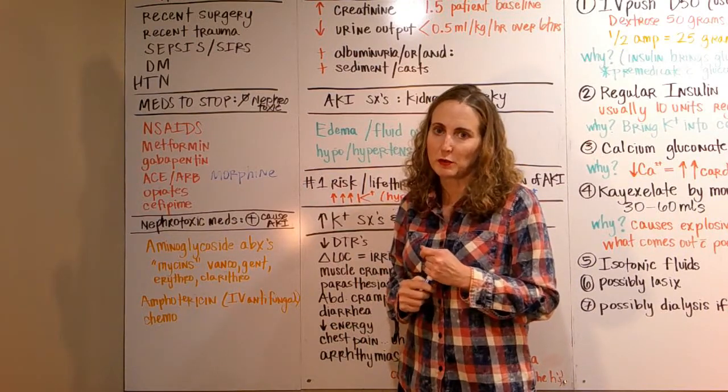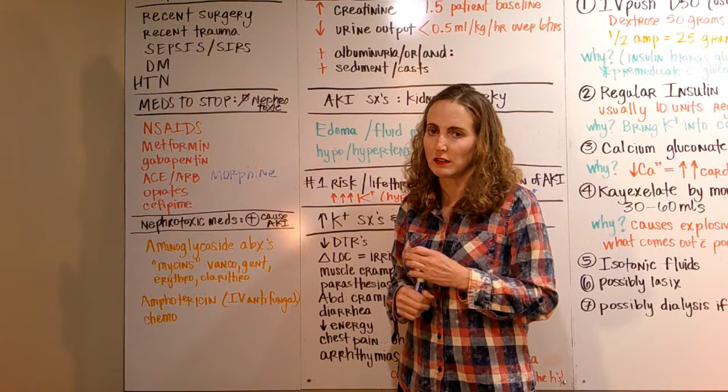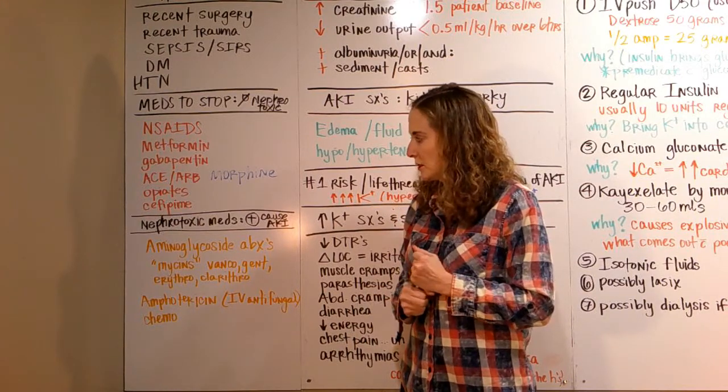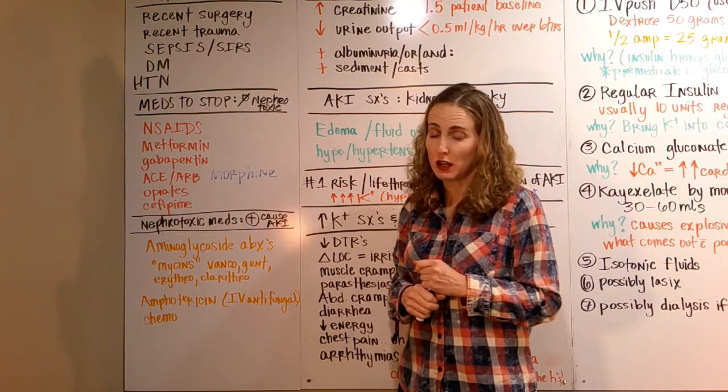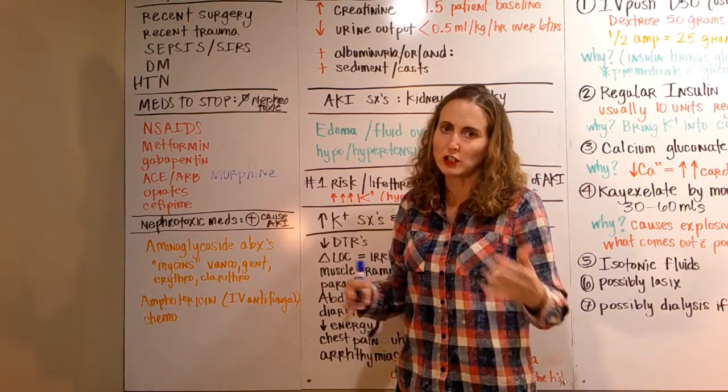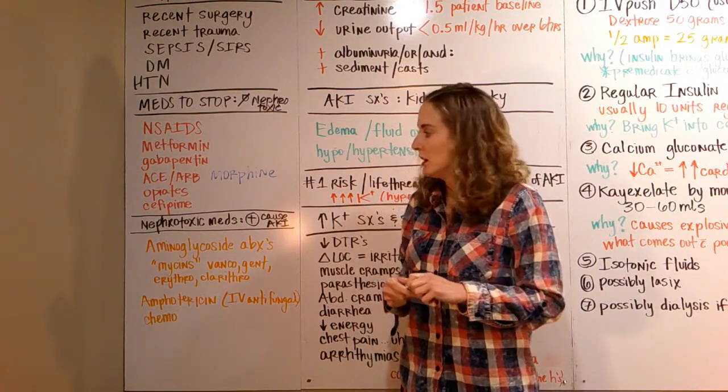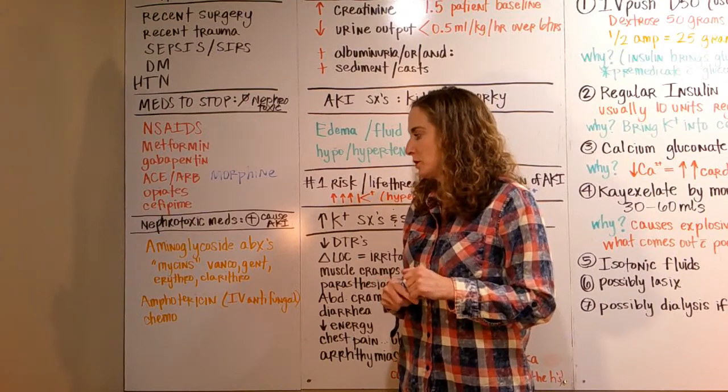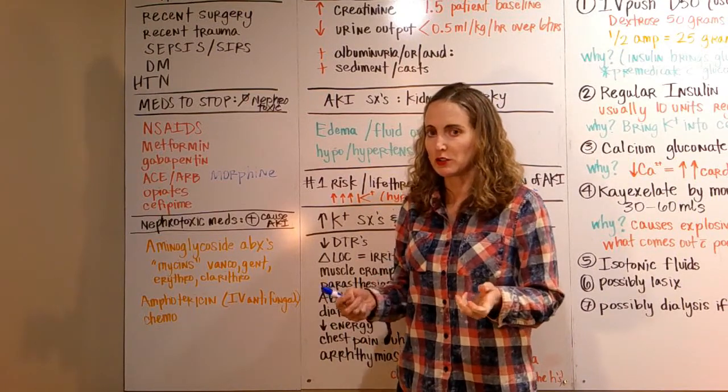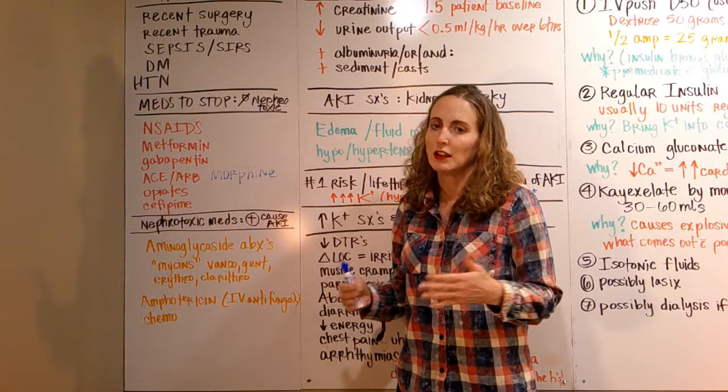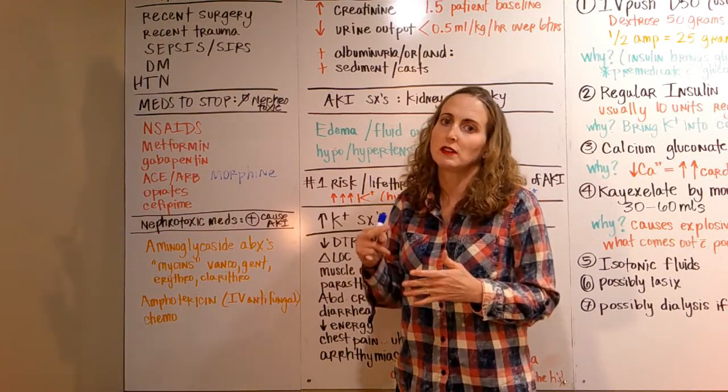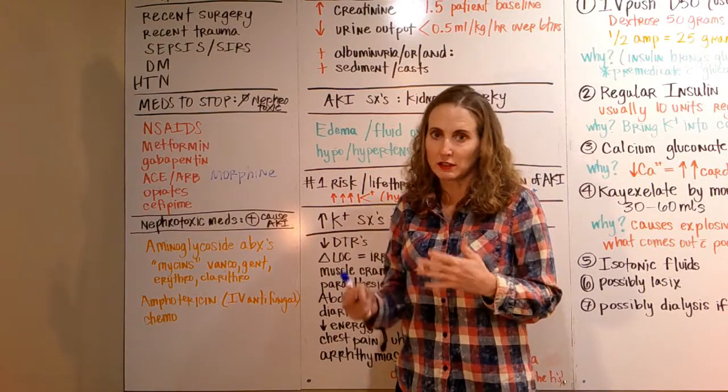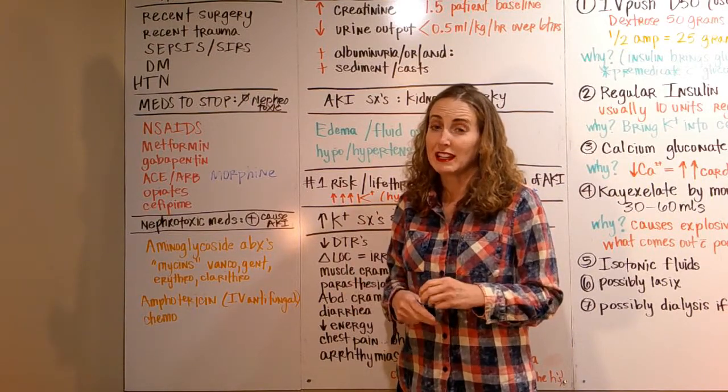Our nephrotoxic medications that can cause or induce a kidney injury: the big ones and most common are the aminoglycoside antibiotics. Those are all the mycins—vancomycin, gentamicin, erythromycin, clarithromycin, and clindamycin. We're talking about IV medications.